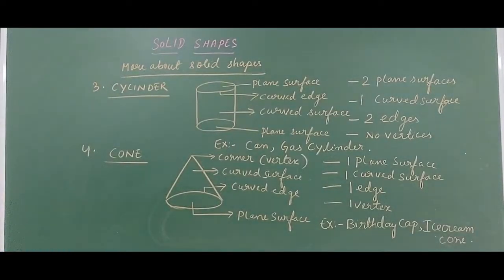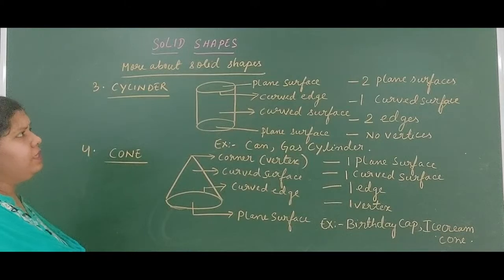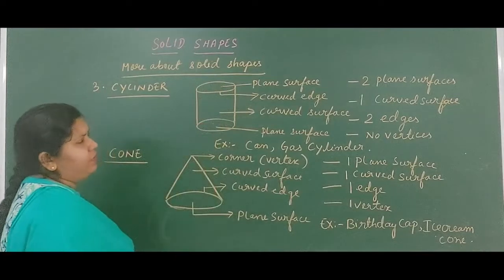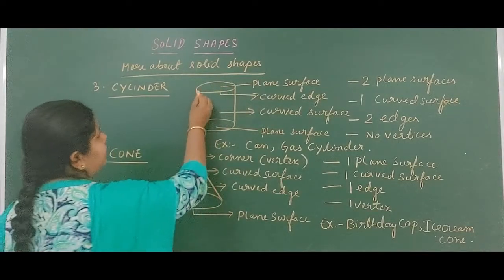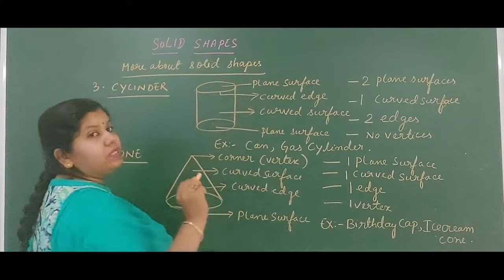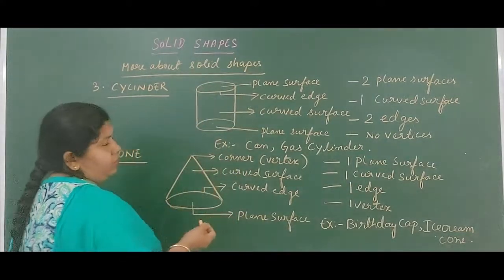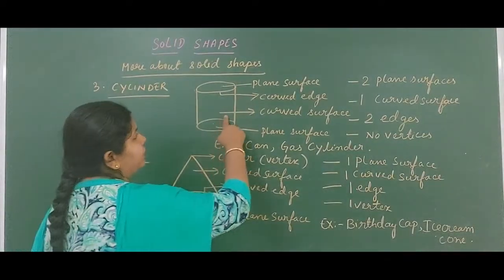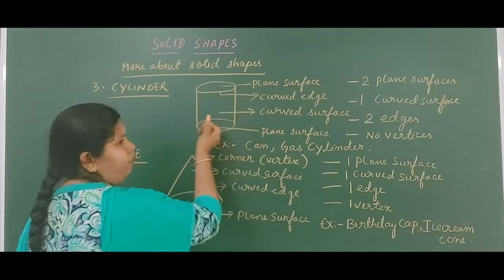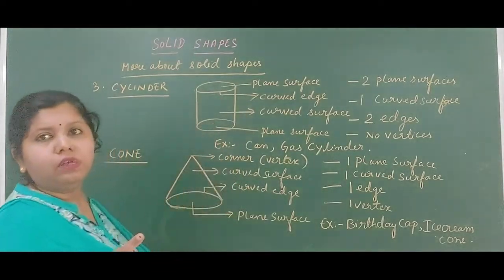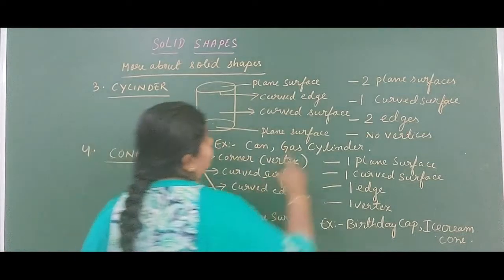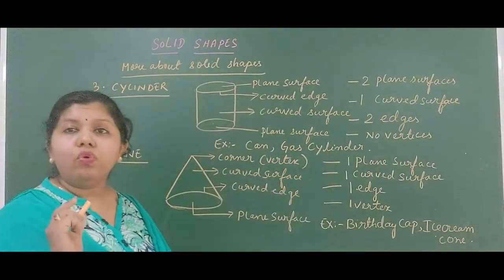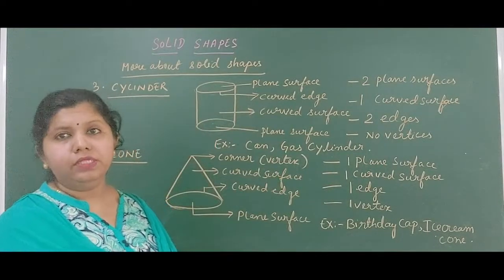Look at this particular shape — this is a cylinder. In this shape, you can see there are 2 plain surfaces at the top and bottom. The curved edge looks like a circle. There is also a curved surface — the middle portion is always curved. So a cylinder has 2 plain surfaces, 1 curved surface, 2 edges, and no vertices.